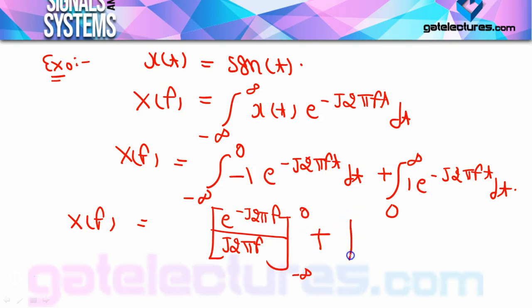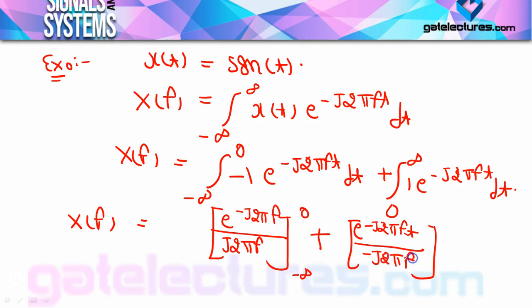For the second part, e^(-j2πft)/(−j2πf) with limits 0 to infinity. Applying the limits: the upper limit gives e^0 = 1, and the lower limit gives e^(+infinity) which is infinity. So one term becomes infinity, and therefore the total sum — with four terms altogether — becomes infinity.